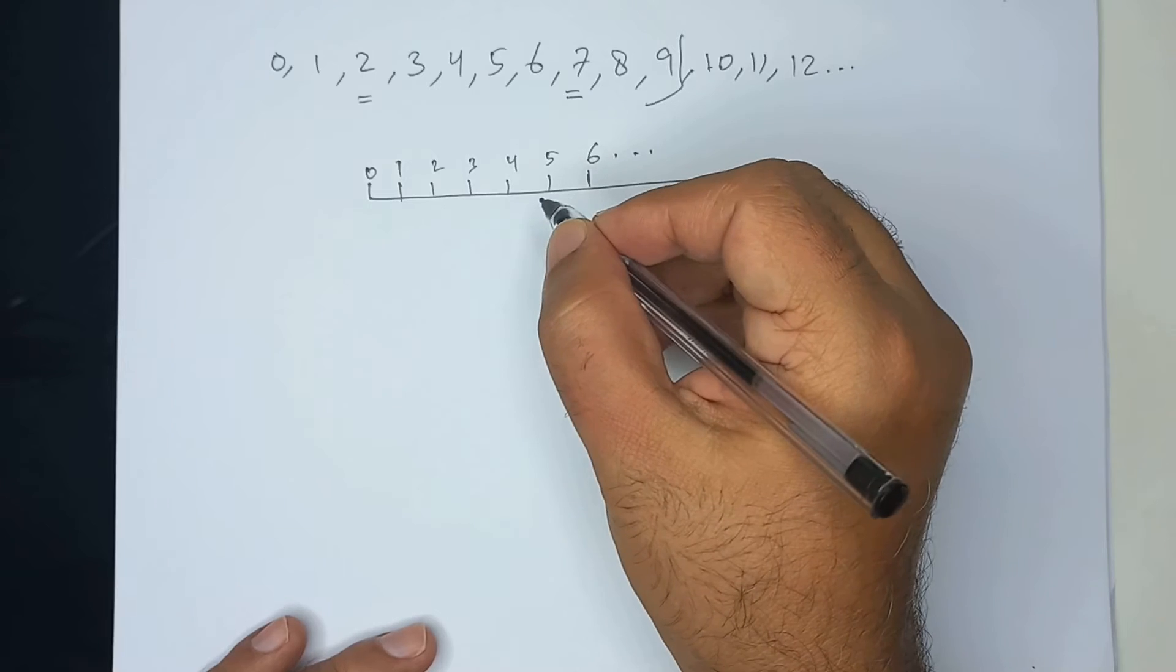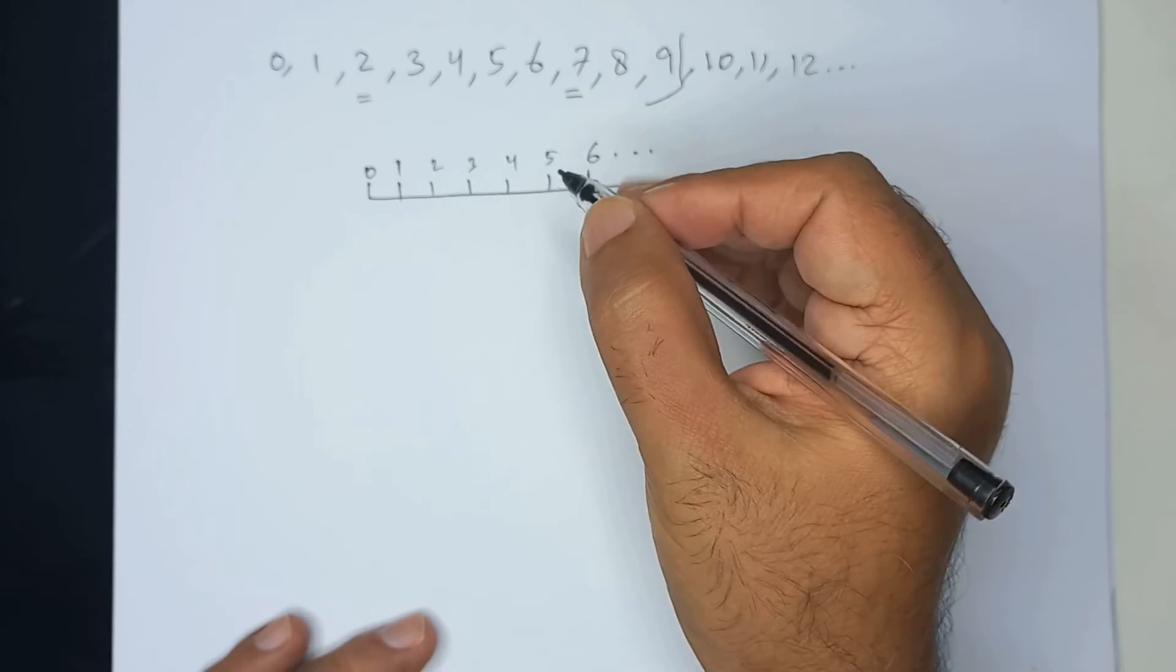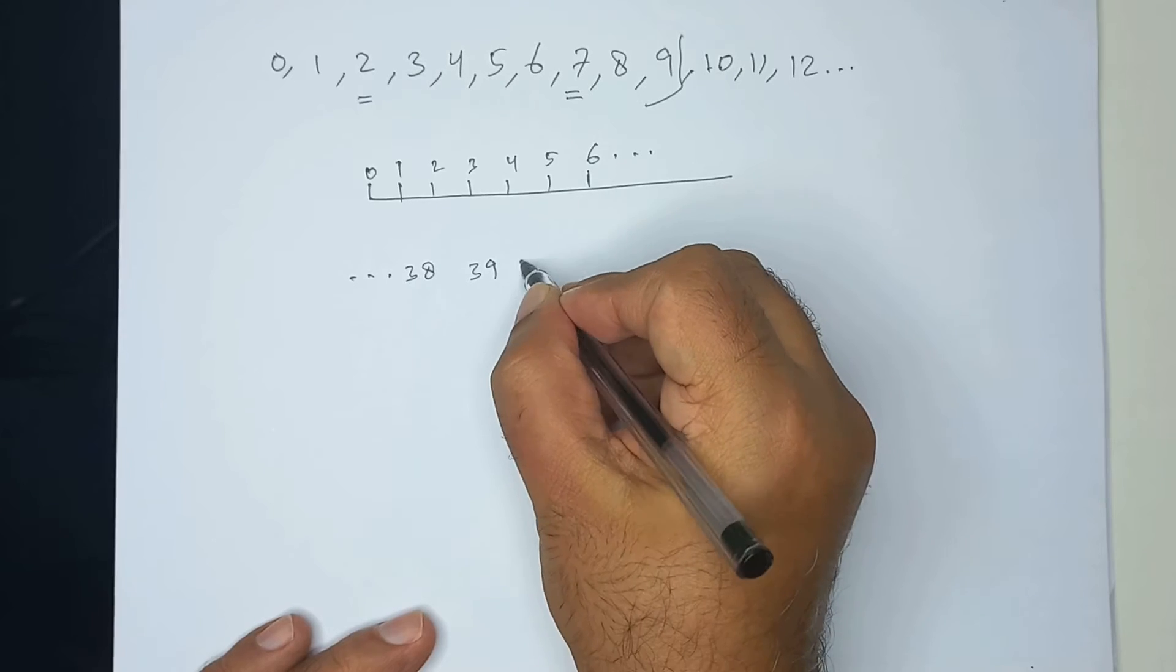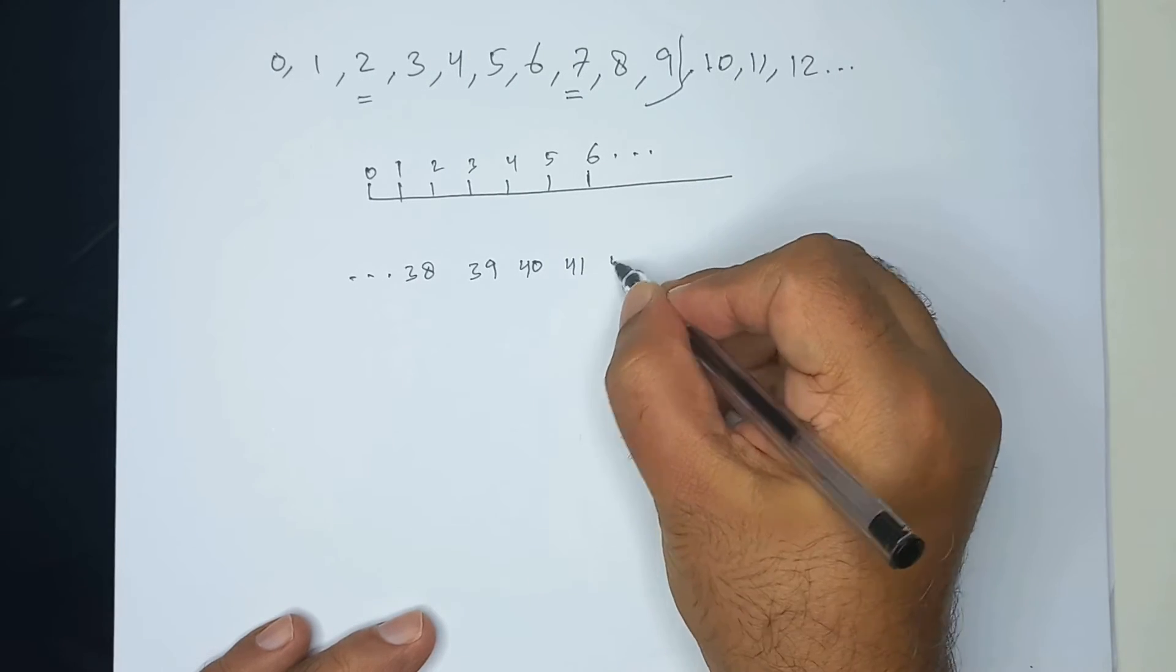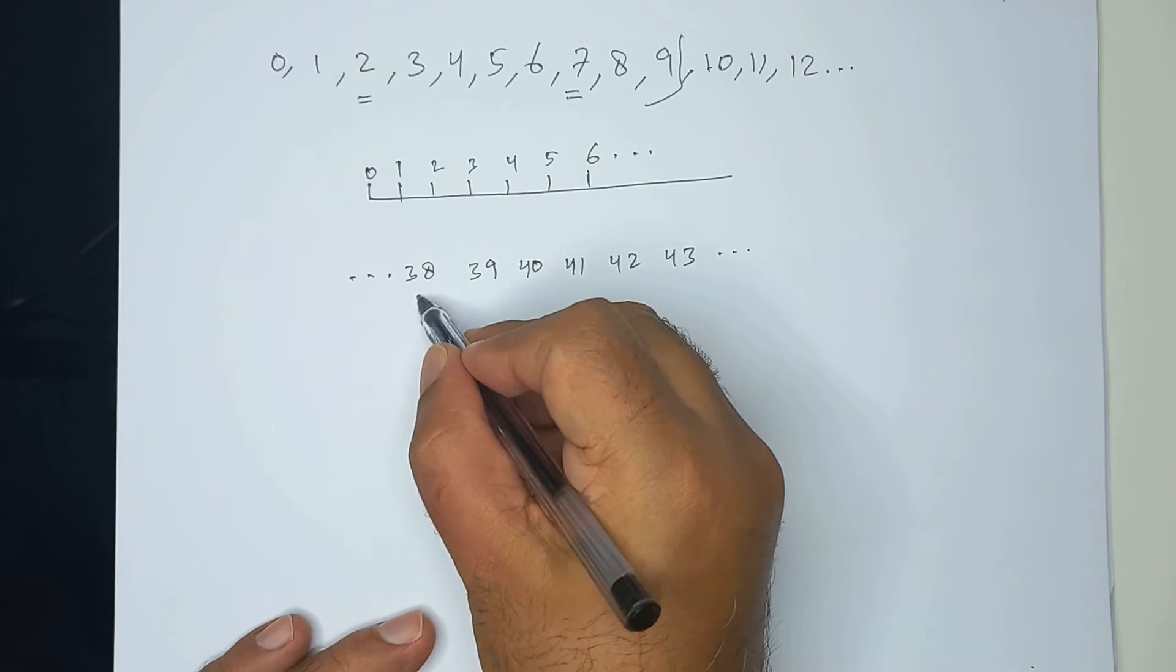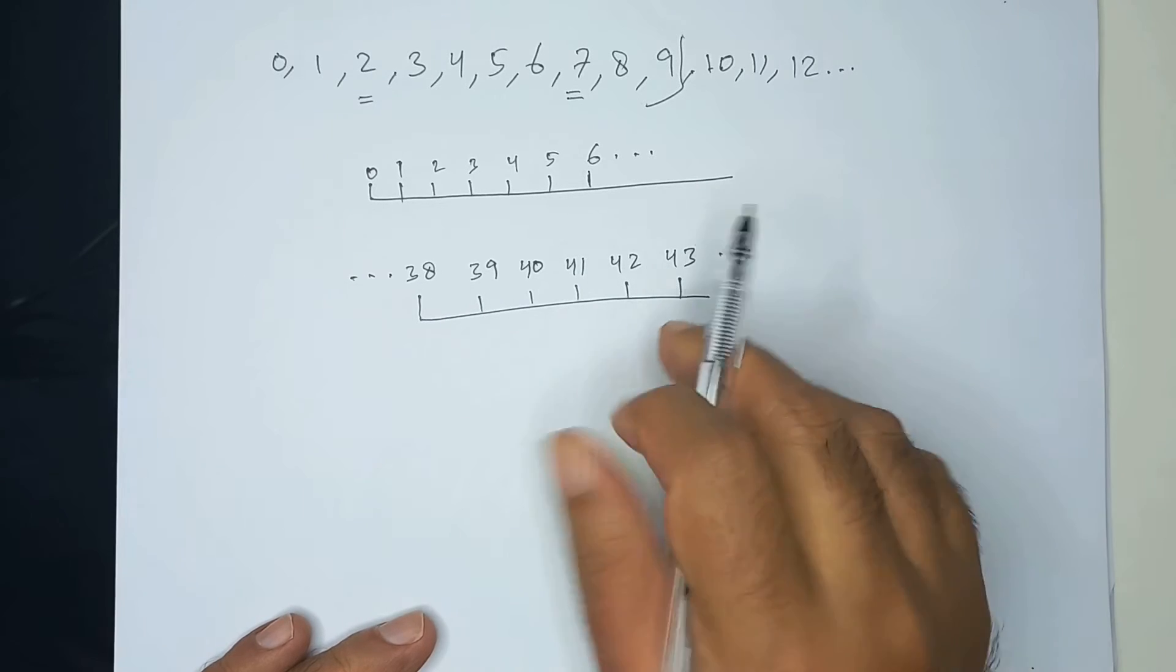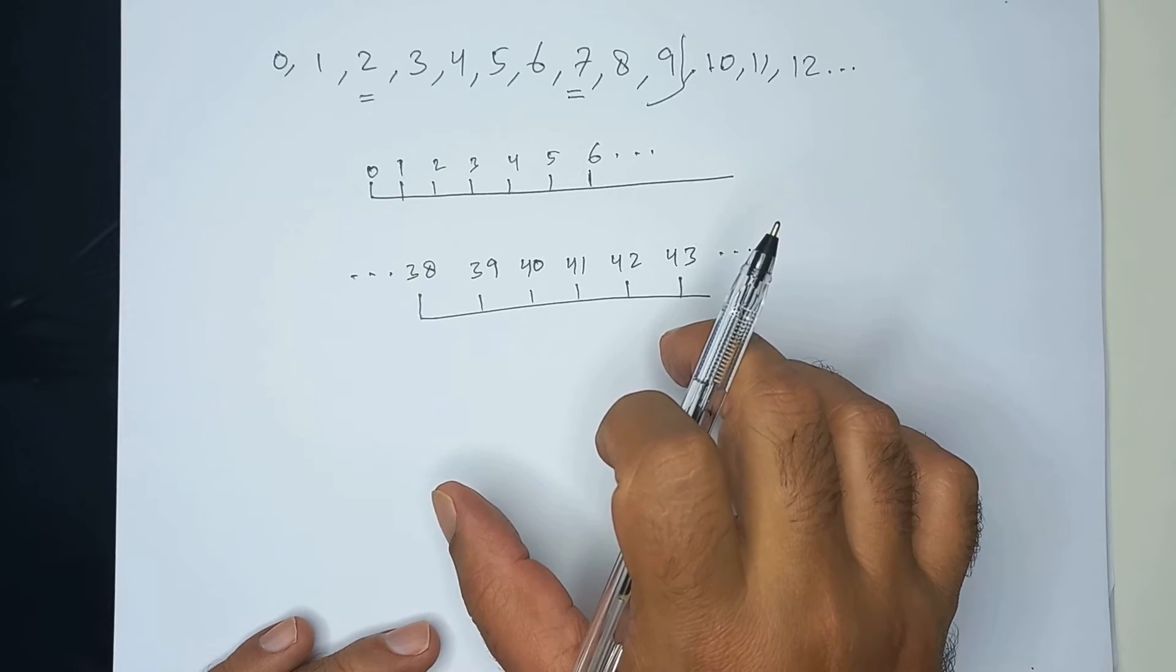We can pick out a section of the number line further on like this. Let's say it's 38, 39, 40, 41, 42, 43. We can pick any section out of that number line.